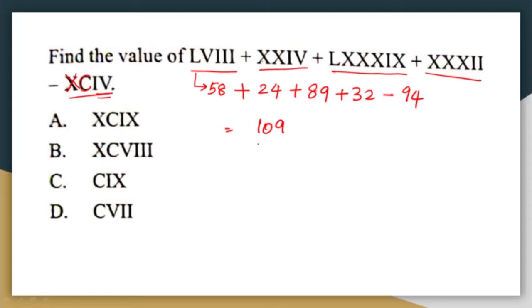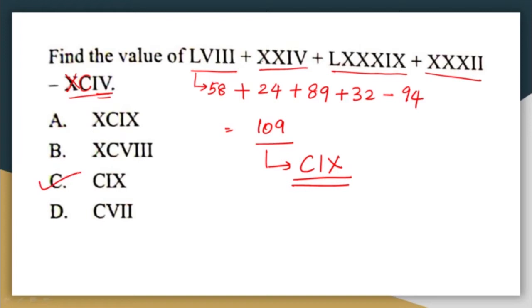Now how do I represent 109 in Roman numerals? 100 is C, and after 100 I have 9, so 109 is represented as CIX. The correct answer here will be option C.